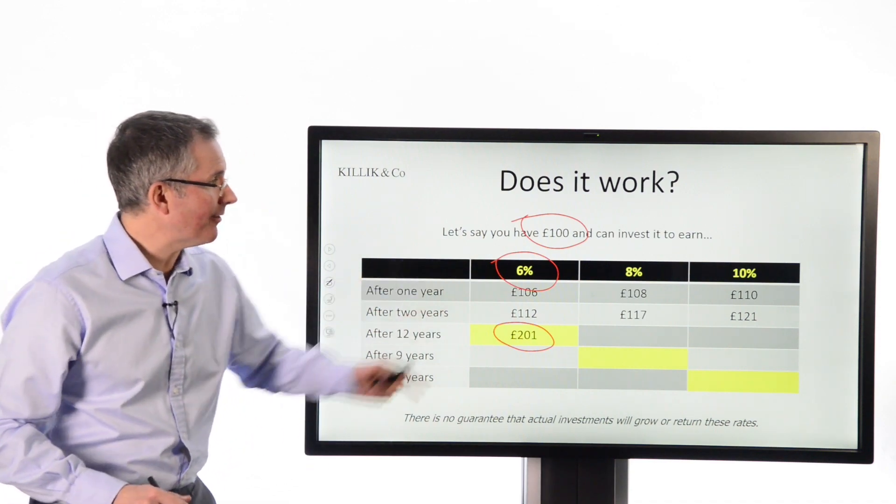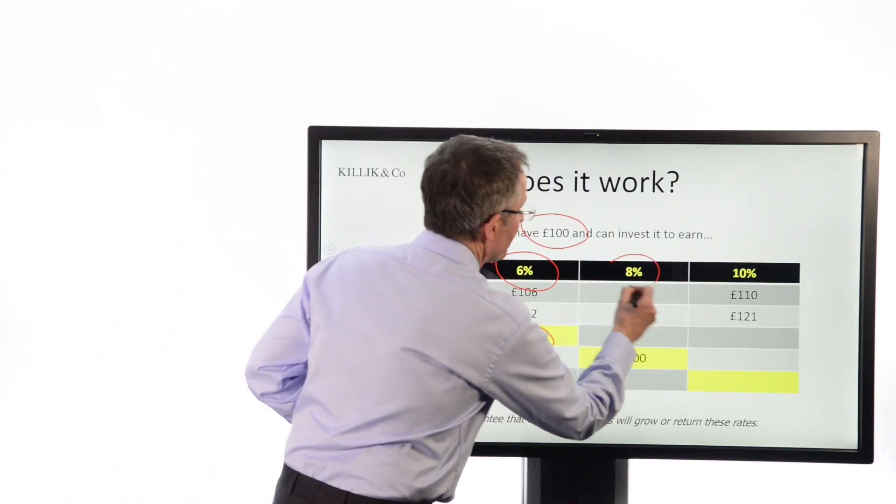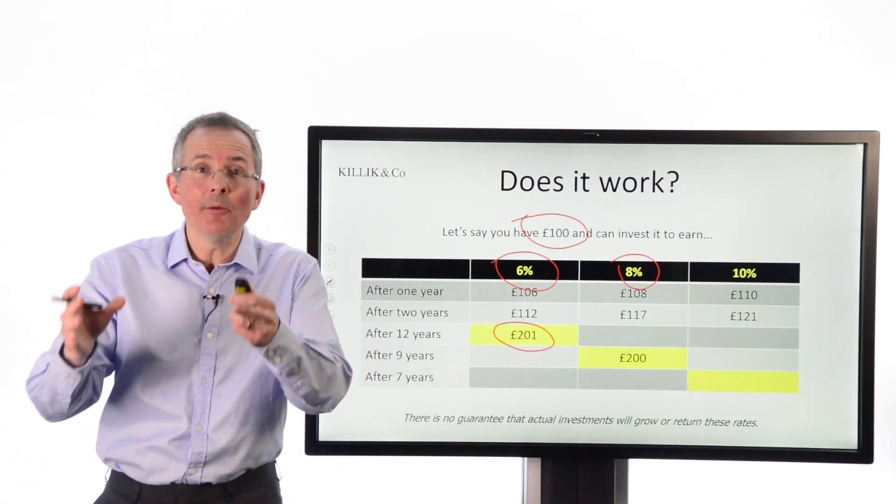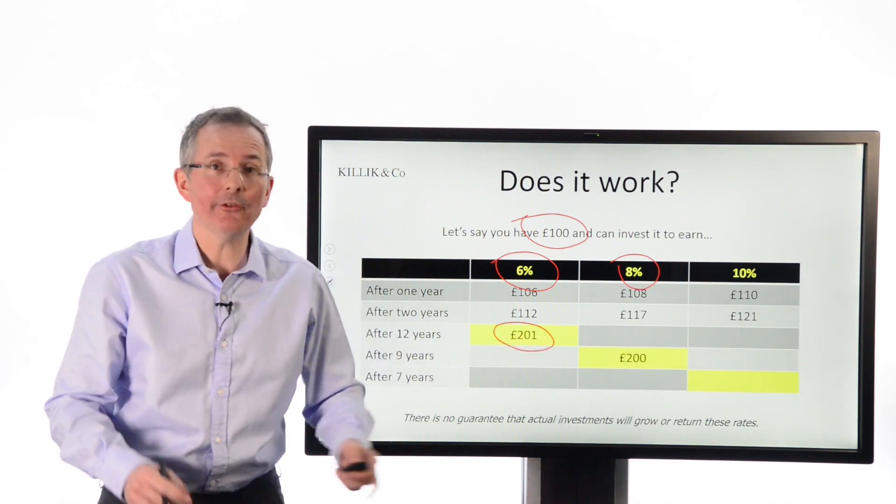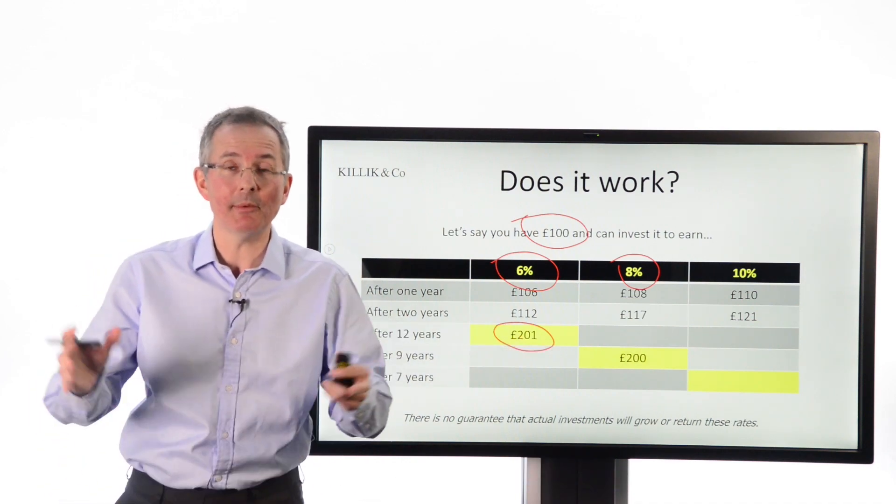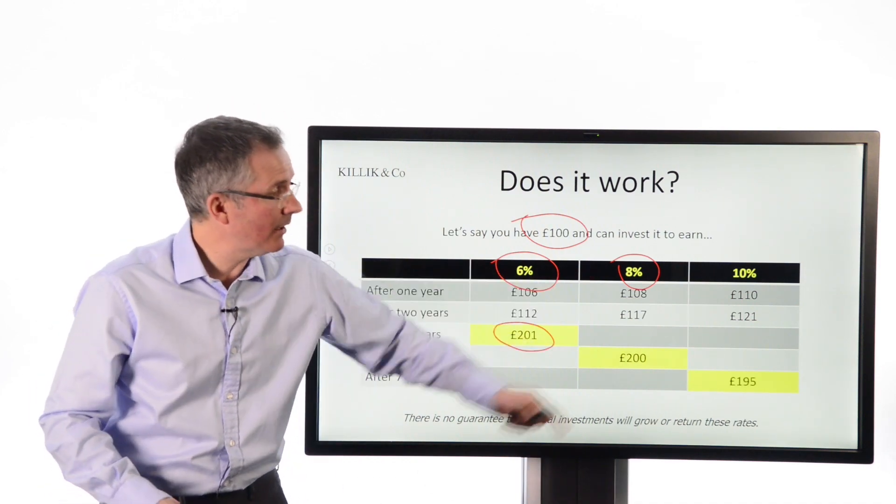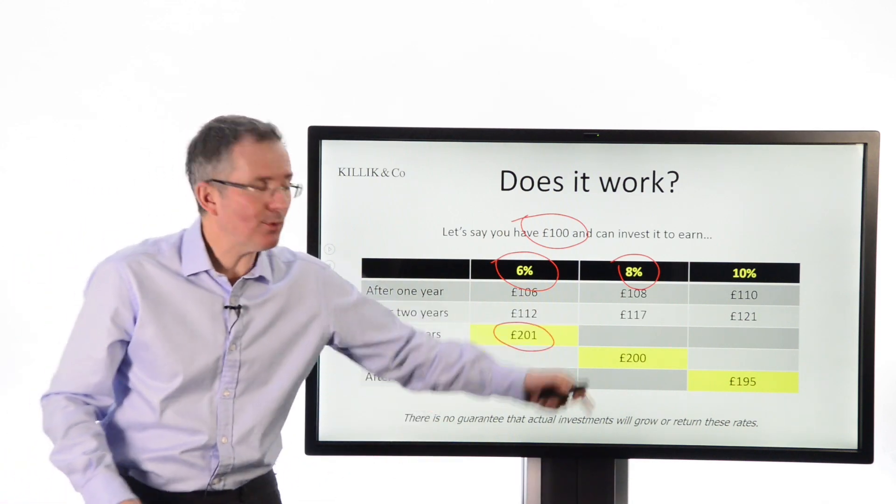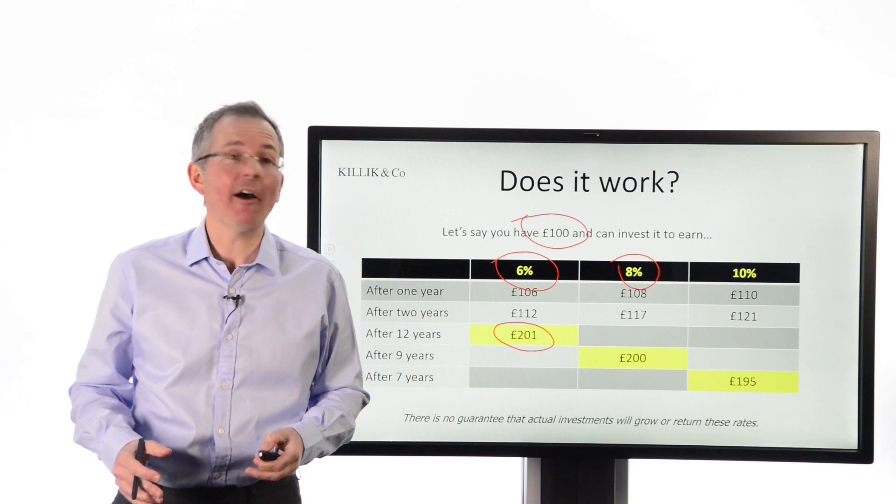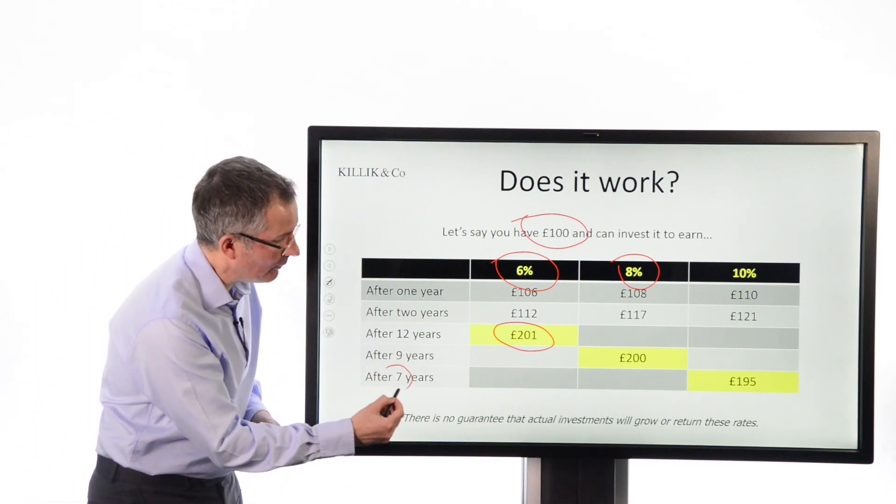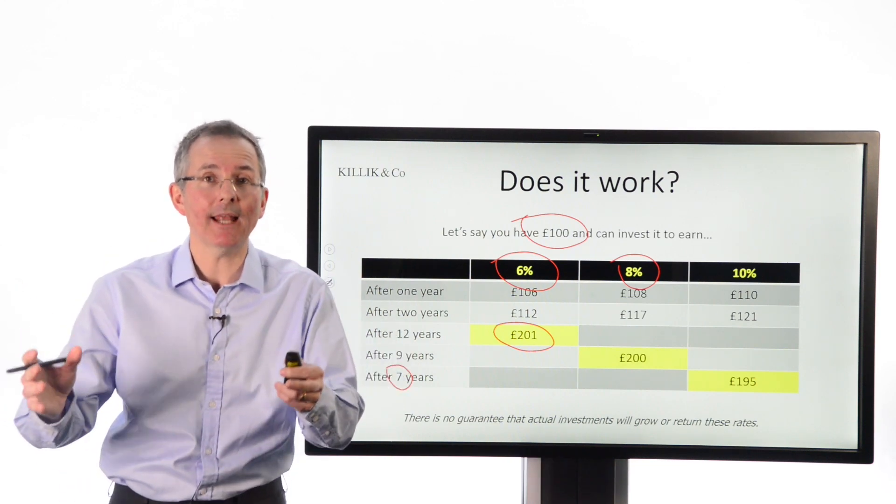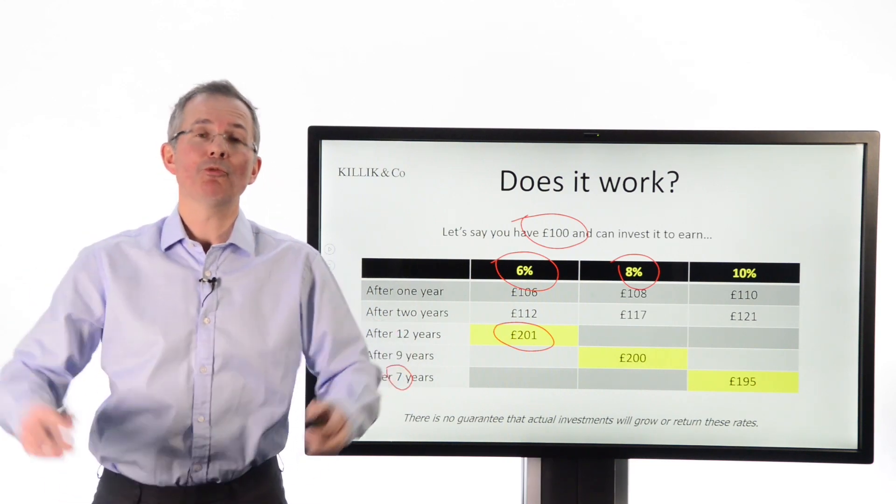At a rate of 8%, I suggested on the previous slide it would take around nine years using the rule of 72, and exactly, pretty much bang on there, £200 is the answer you get out of the compounding calculator with a bit of rounding. And at 10%, well, not quite as accurate, but after seven years you get to a figure of around £195. So the true answer is more like 7.2 years. You get the idea. There's a back-of-an-envelope way of calculating how long it'll take to double your money, pretty handy.